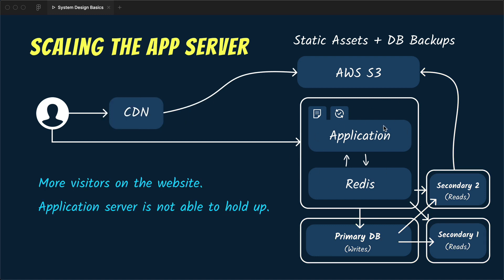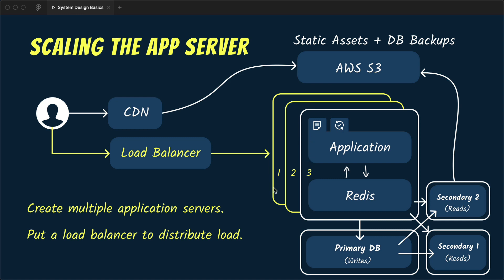After some time we notice that our single application server can no longer hold up to the load we're getting. We look at the infrastructure and realize one server will never be enough, so we decide to add more application servers to distribute the load. To do that we also add a load balancer, which identifies servers with less load and distributes traffic equally so all servers handle equal traffic at any point and no single server is overwhelmed. This fixes most of our load-related issues and the application is able to scale and handle a significant number of users.